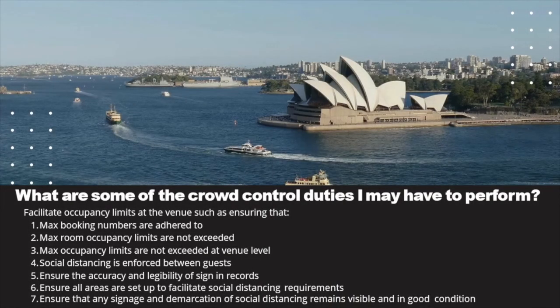As a COVID-safe marshal, your duties will be varied. Here are some of the crowd control duties that you may have to perform. You must facilitate occupancy limits at the venue, such as ensuring that max booking numbers are adhered to, max room occupancy limits are not exceeded, max occupancy limits are not exceeded at venue level, and social distancing is enforced between guests.